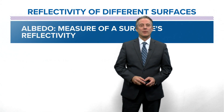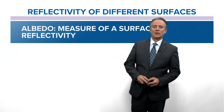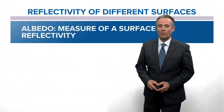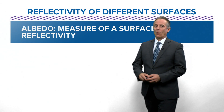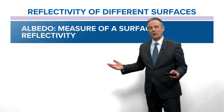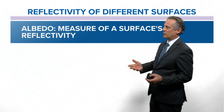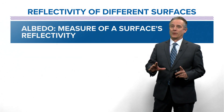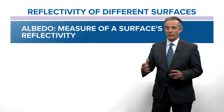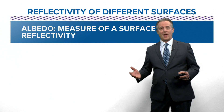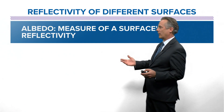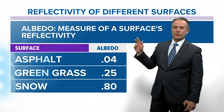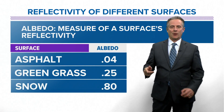Hi everyone, and welcome to the Local 5 Weather Lab. Today's topic is going to be albedo. What is albedo? Well, it's basically the reflectivity of surfaces, and it makes a big difference in weather and in forecasting and everything about the weather, really. So let's talk about some of the different surfaces out there.